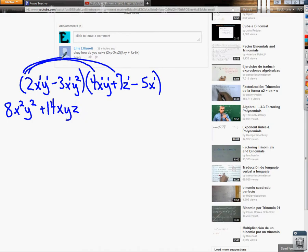Then I would do 2xy times negative 5x, that would be negative 10, and there's 2 x's here, so I have x to the second power, times y.